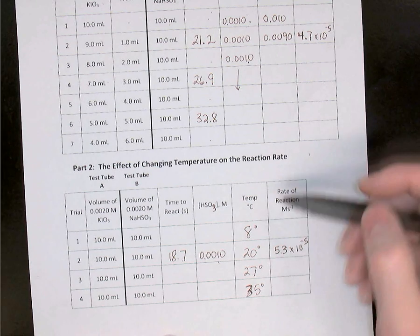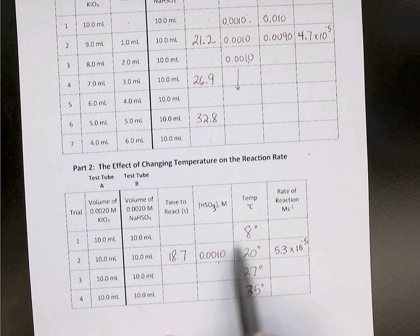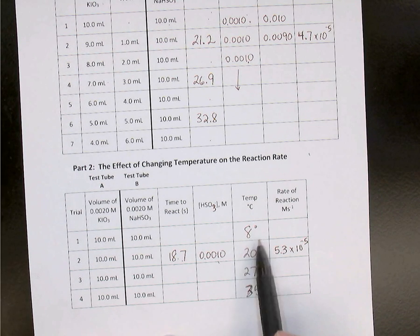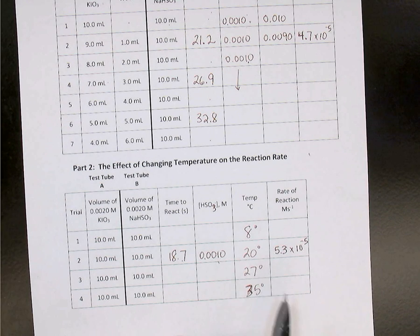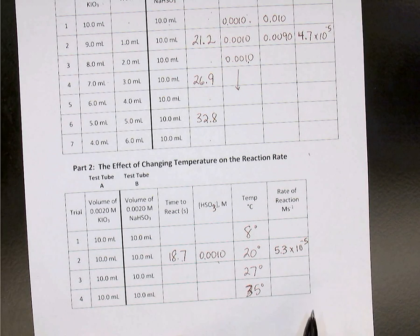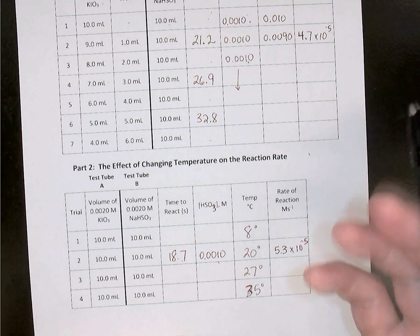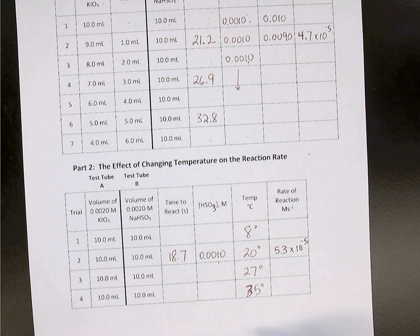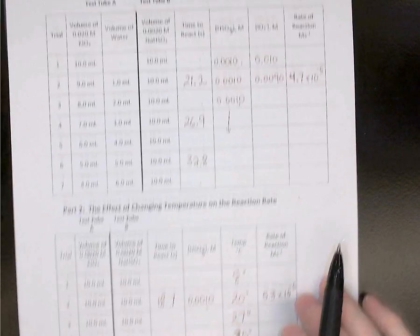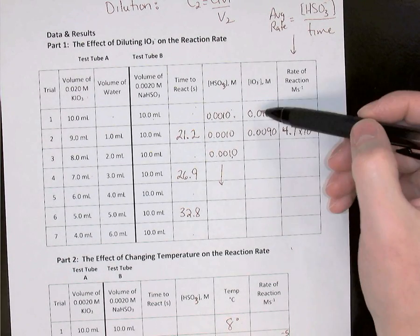You should have had one trial in an ice bath at a temperature somewhere between 5 and 12 degrees Celsius — mine was 8 degrees. Then we used two water baths: one at 27 degrees and one at 35 degrees. Record the temperature shown on the water bath when you took your test tubes out to mix them, so you may have 27.5 or 28 degrees.